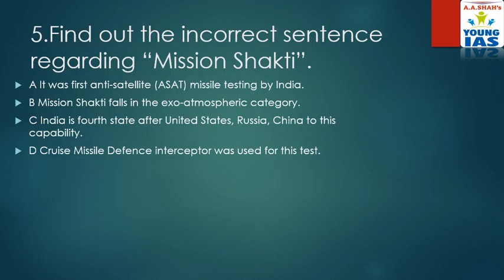Next question: find out the incorrect sentence regarding Mission Shakti. India has become the fourth nation to have this power, after Russia, China, and the USA. Option A: it was the first anti-satellite missile test by India — yes, right. Option B: Mission Shakti falls in the exo-atmospheric category — yes, right. Option C: India is the fourth state after USA, Russia, China — yes, right. Option D: a cruise missile defense interceptor was used for this test — no, this is wrong. It was a ballistic missile, not a cruise missile.